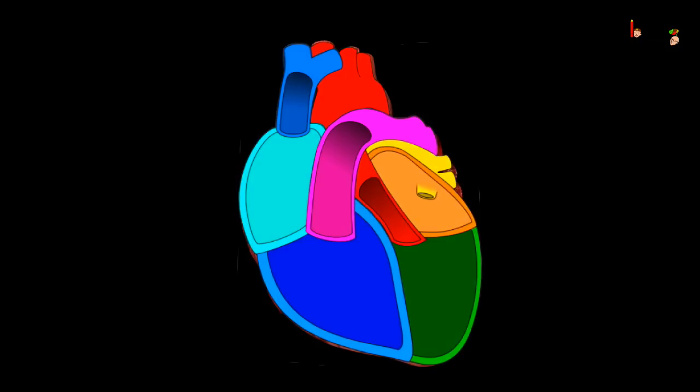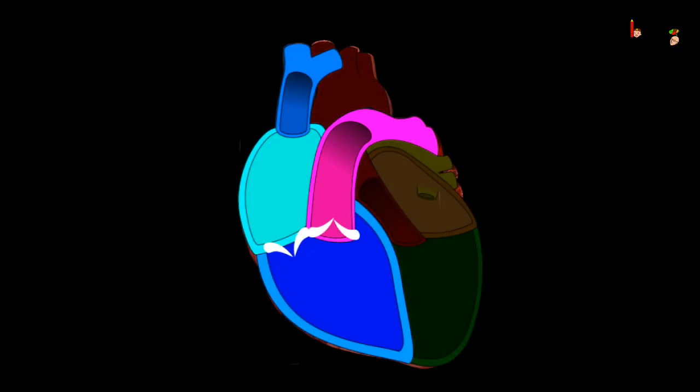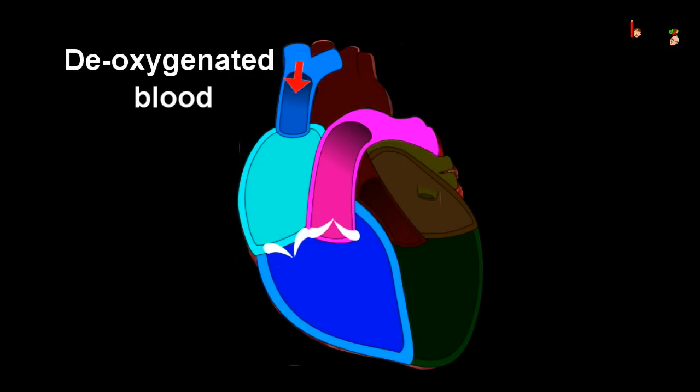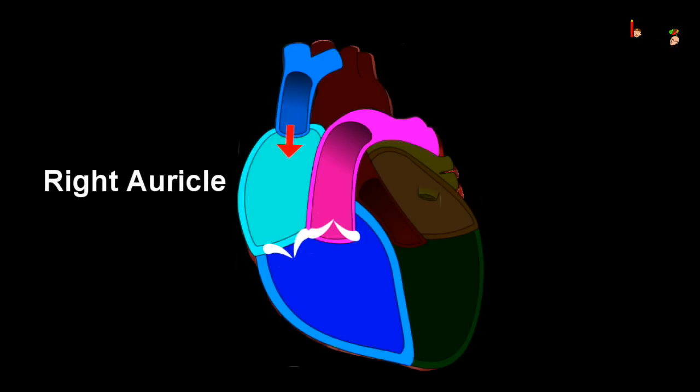Two major veins, namely the vena cava veins, pour the deoxygenated blood into the right atrium. Then the right atrium pumps the blood into the right ventricle.